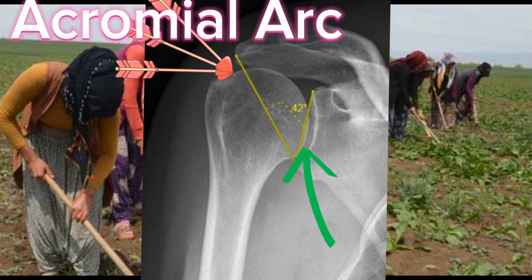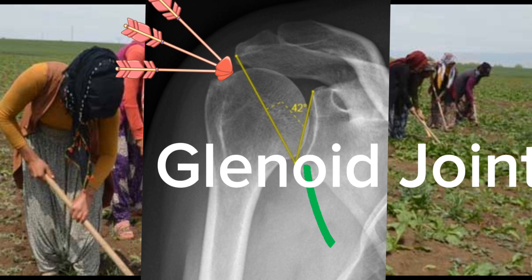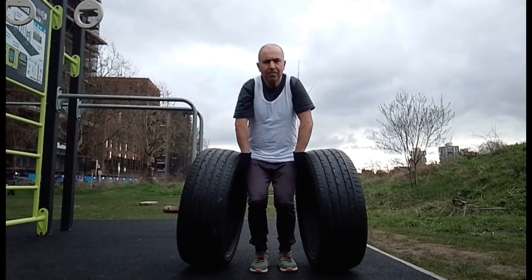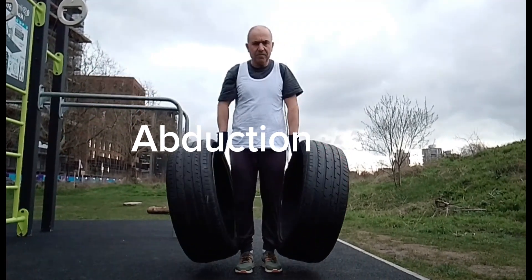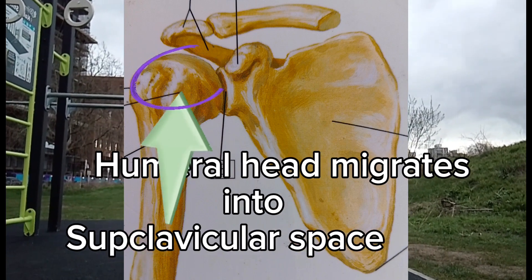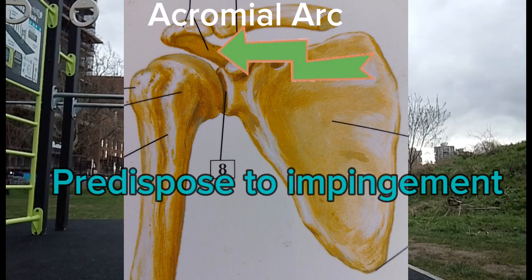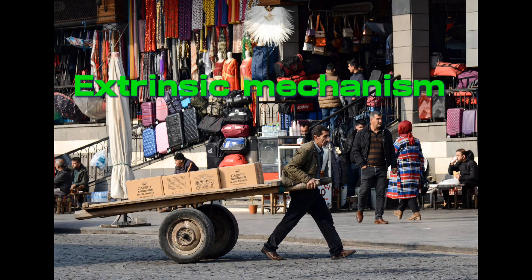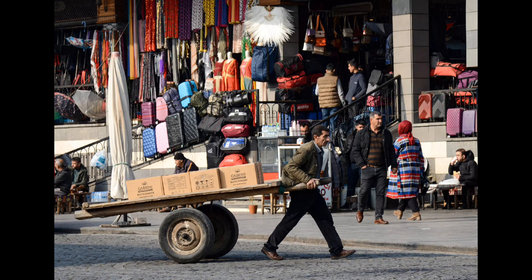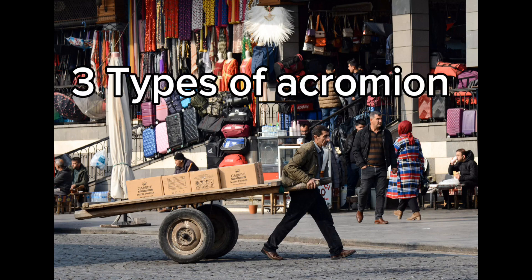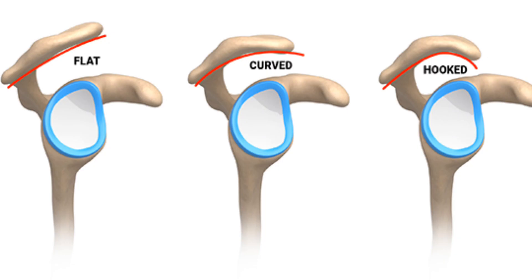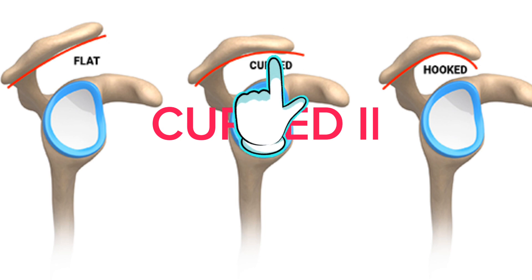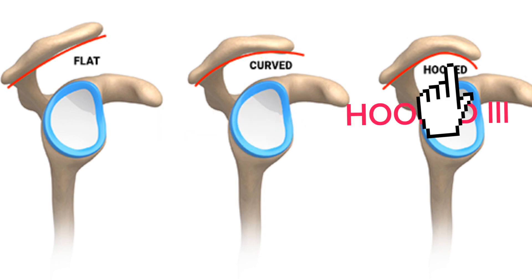The acromial arch and vertical glenoid orientation have anatomical variations that are connected to rotator cuff tears. When the arm is abducted actively, the humeral head is pushed into the acromial arch, which results in impingement of the supraspinatus muscle. The rotator cuff tear has additional anatomical risk factors such as the three types of acromion: type 1 flat, type 2 curved, and type 3 hooked.